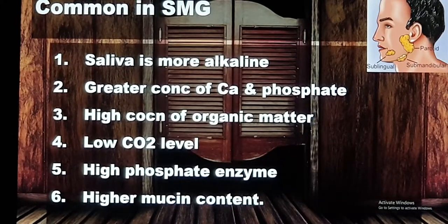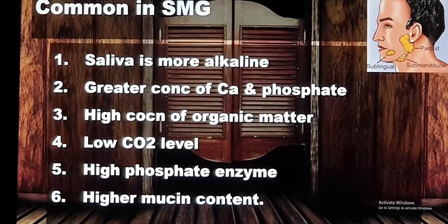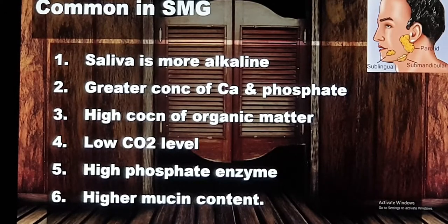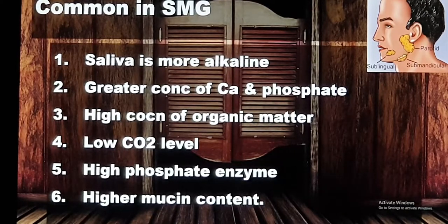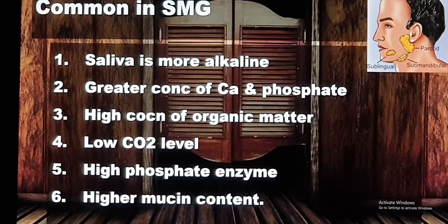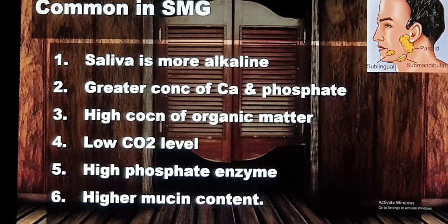Why is it common in the submandibular gland? The saliva from the submandibular gland is different from that of the parotid and sublingual. It is more alkaline and has a higher concentration of calcium, phosphate, organic matter, and enzymes, as well as a low amount of carbon dioxide. These chemical differences predispose it to stone formation.